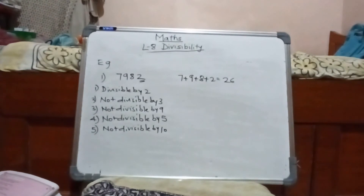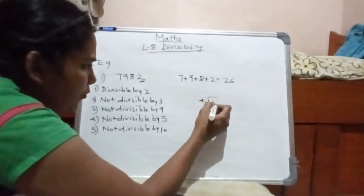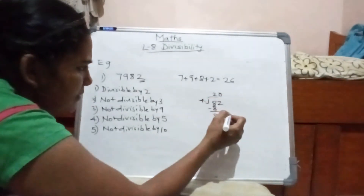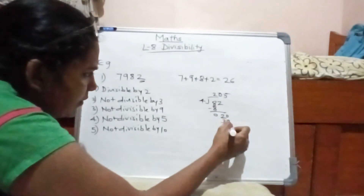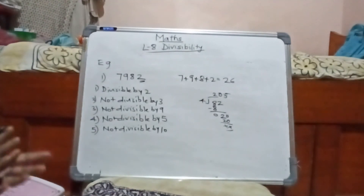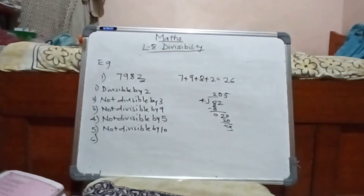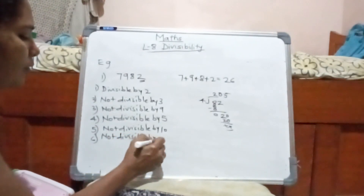Now whether it is divisible by 4 or not — we look at the last two digits: 82. Does 82 go into 4? No, it does not. Because 4 times 20 is 80, and the remainder is 2, which gives a decimal fraction. So it is completely not divisible by 4, because it gives a decimal answer.